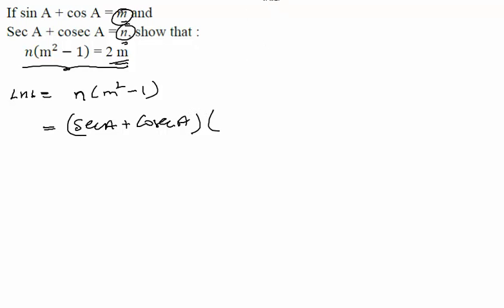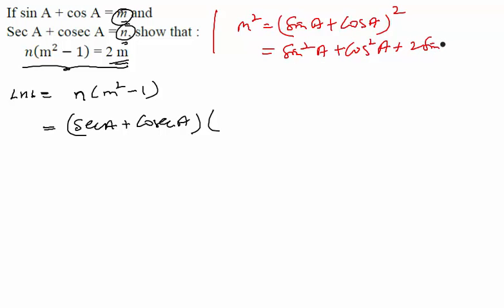And what is m²? Let us first calculate m² separately. So m² will become (sin a + cos a) whole square. Now, if you open this bracket, you will get sin²a + cos²a + 2 sin a cos a, but sin²a + cos²a is equal to 1, which means that m² should become equal to 1 + 2 sin a cos a, correct?